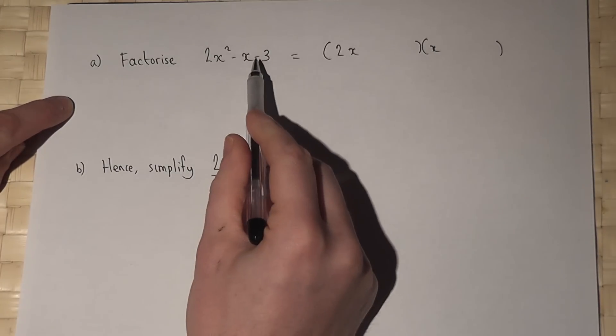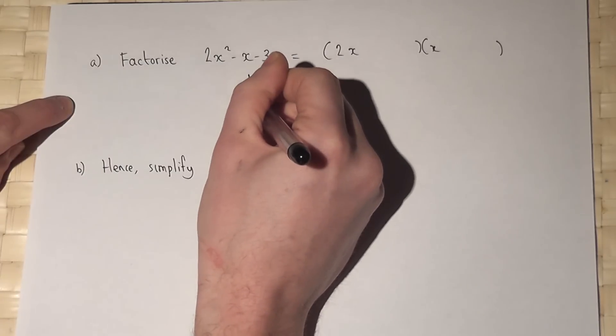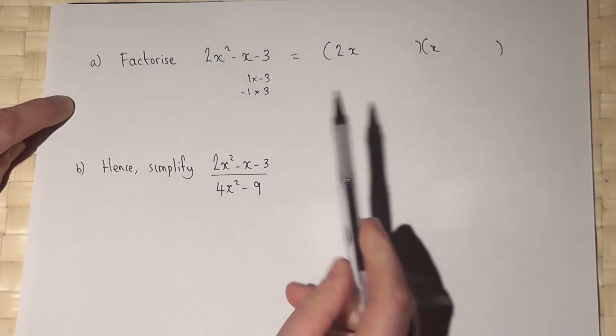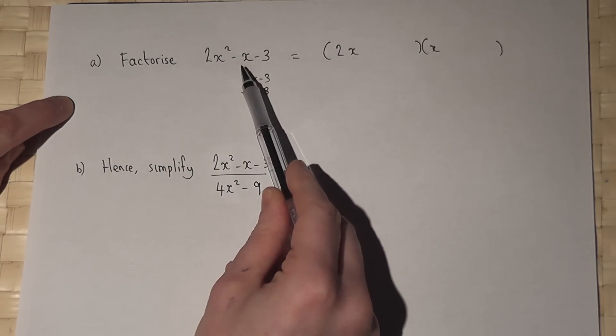But to get a minus 3 there requires either 1 times minus 3 or minus 1 times plus 3. And I must put these numbers in here in such a way as to get a minus x.